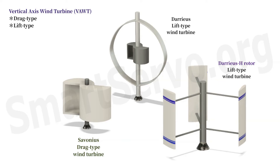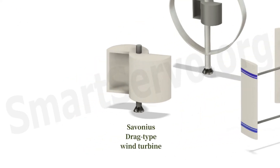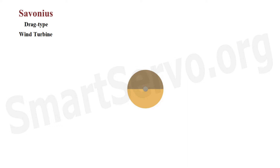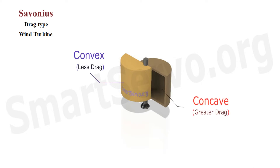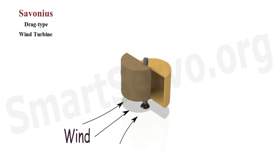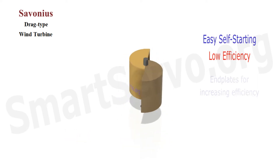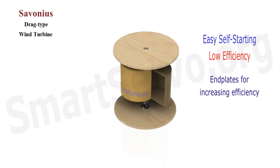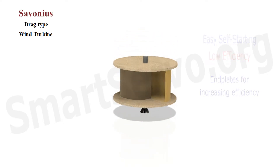Among them, the drag type is represented by the Savonius wind turbine. It is constructed as two semi-cylinders, each offset from the axis. Since one side is convex and the other is concave, rotation is caused by different wind drag on both sides. This wind turbine is easy to start, but inefficient, because the speed of the drag blades is slow, usually impossible to exceed the wind speed.